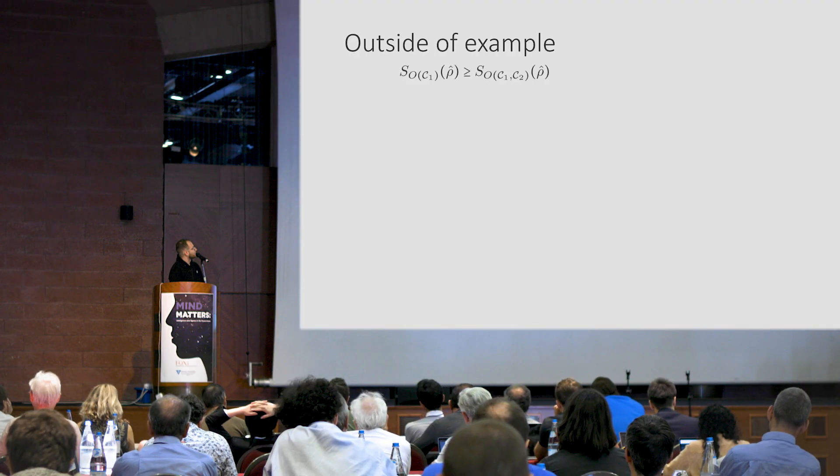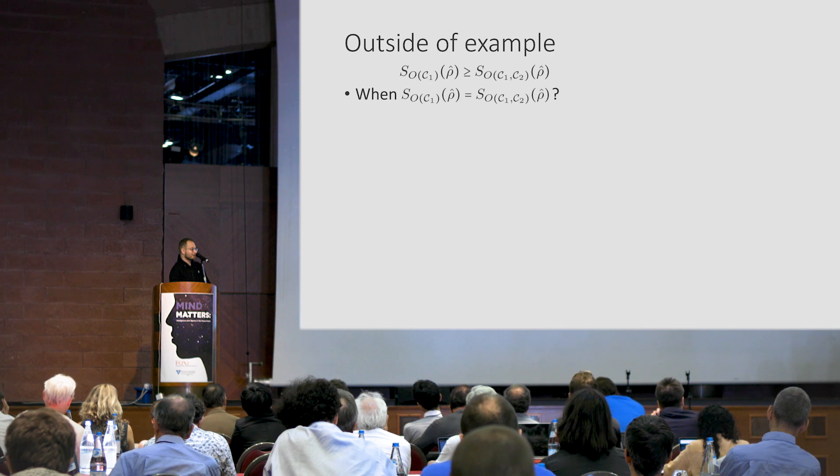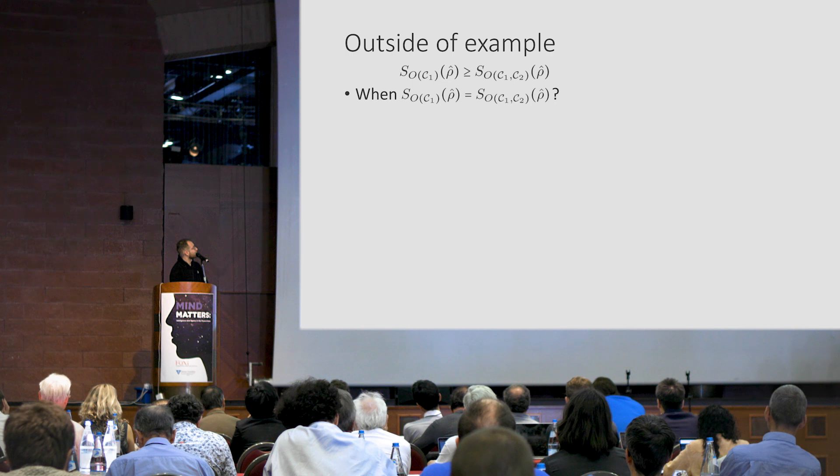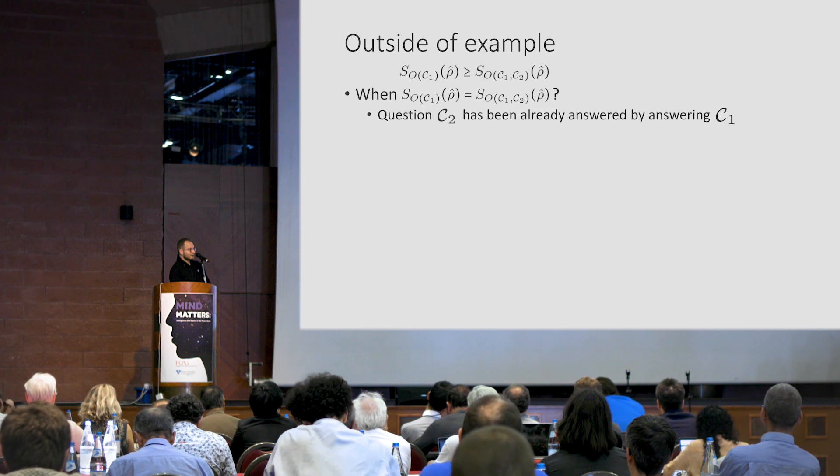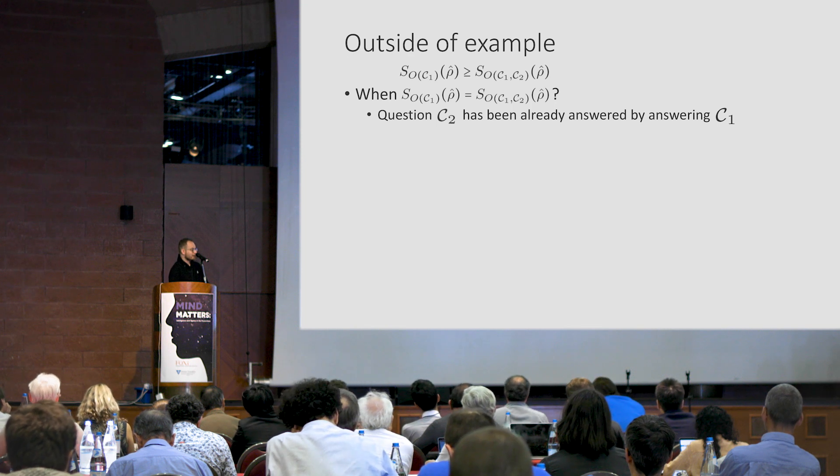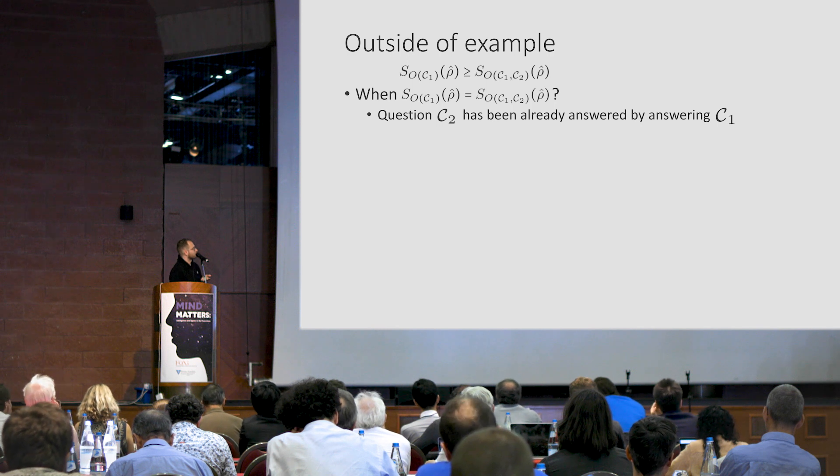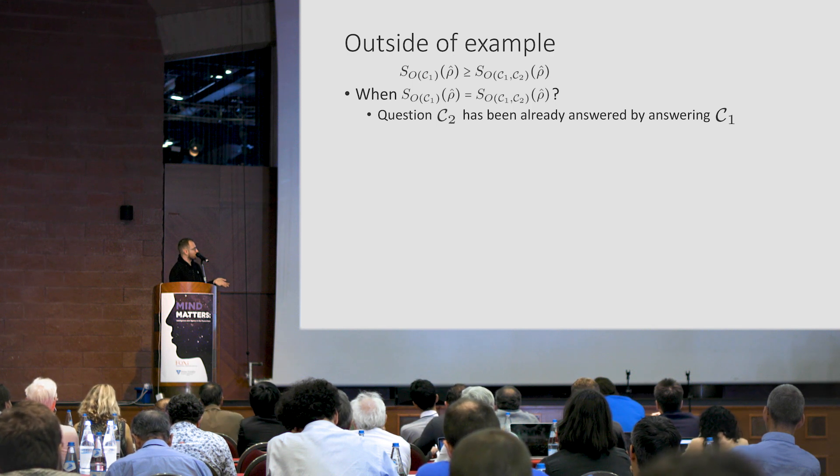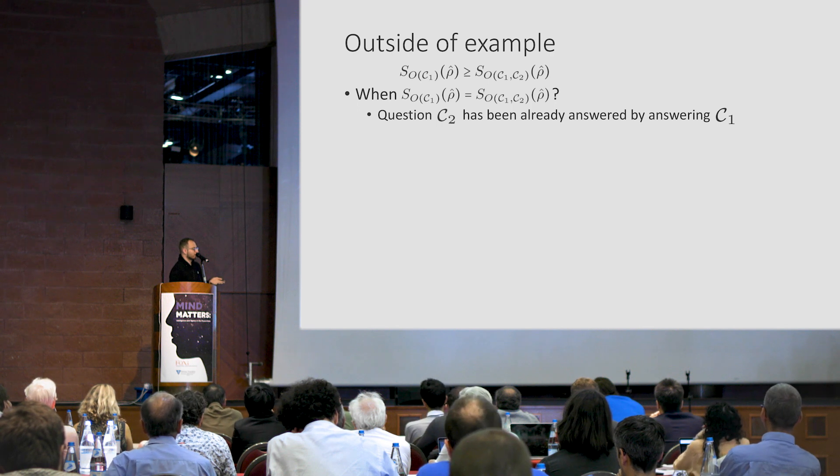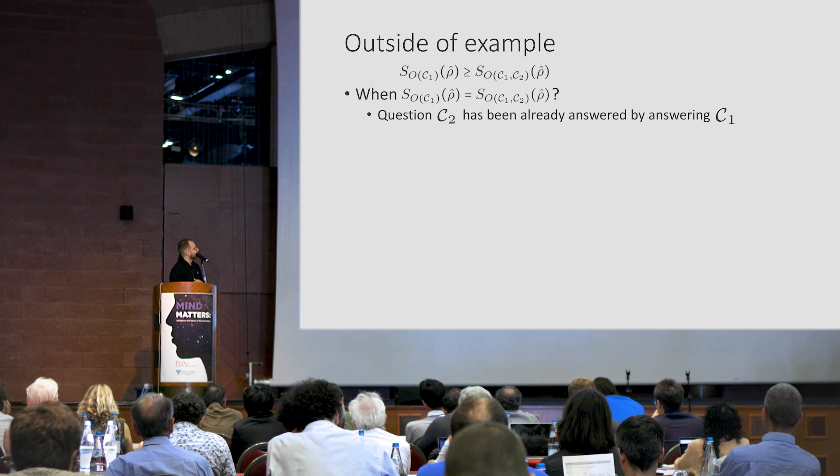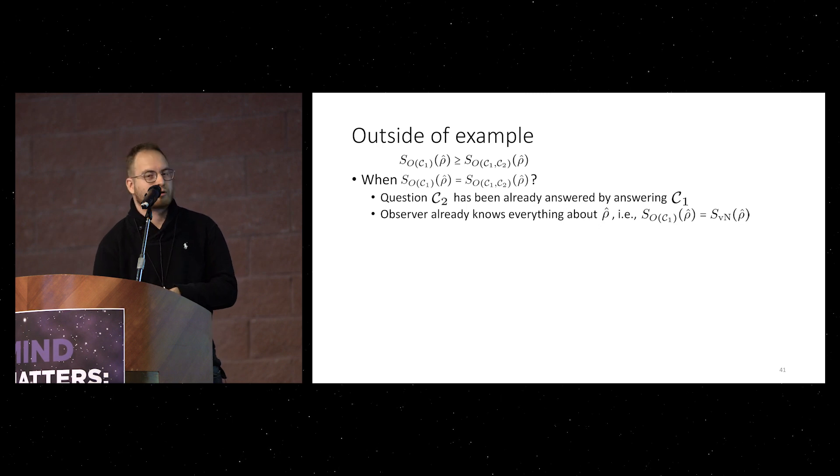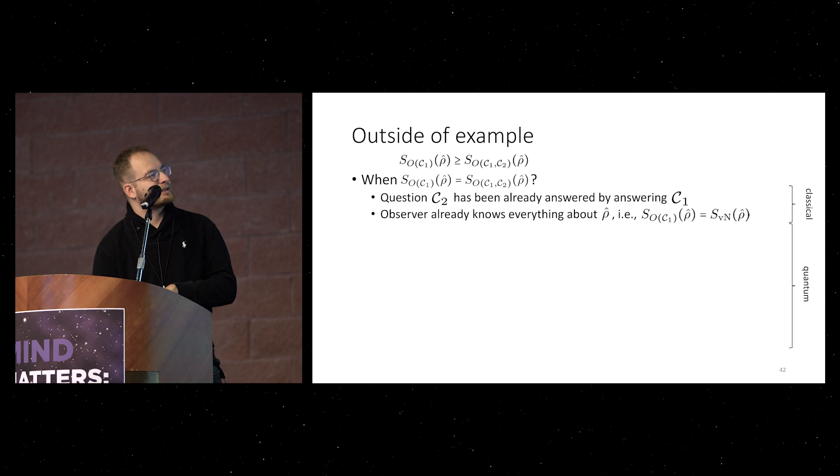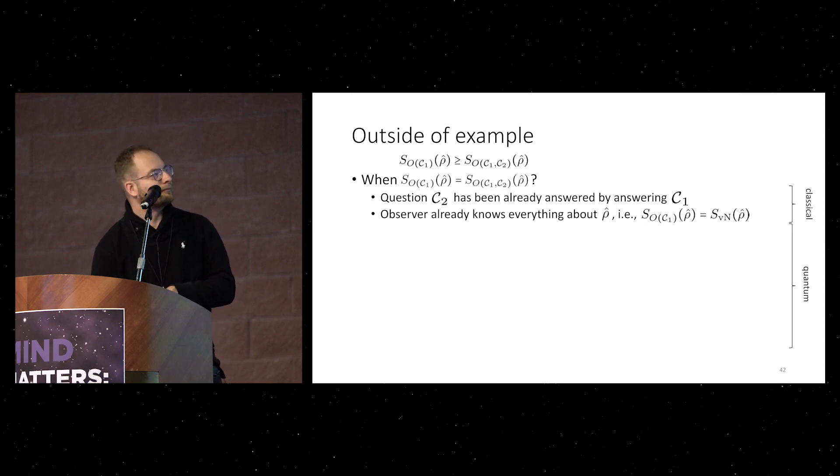And now about an example, which was not shown in our, you can ask when your additional question doesn't decrease your knowledge, doesn't increase knowledge. Well, one obvious case is when a question C2 has been already answered by the previous question. Let's say, you ask me, is it man, or is it an Austrian man? And after you ask me, is it an Austrian man? You ask me, is he Austrian? And obviously, if you ask me the second question, I don't give you any new information. Also, you might already know everything about the microstate, and then asking more questions doesn't increase your knowledge, because you already know everything. So, these are sorts of cases which holds in classic case, although in quantum case as well.